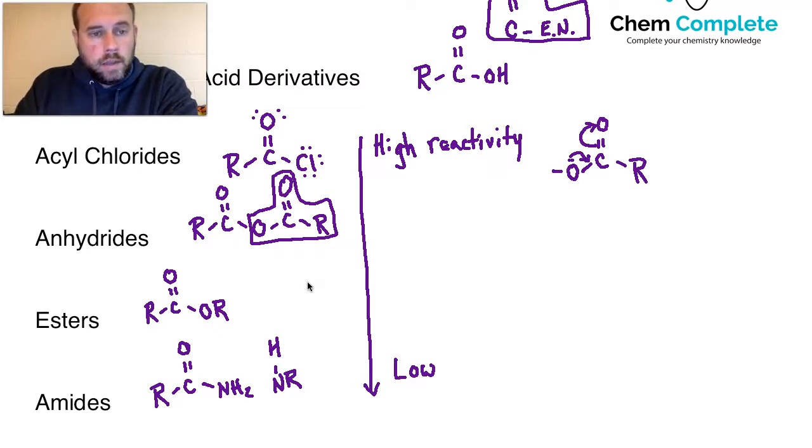When we are taking a look at this, everything that is higher on the list can be turned into something lower on the list, but not vice versa. So in other words, acyl chlorides can be turned into anhydrides, esters, and amides. Anhydrides can be turned into esters and amides. Esters can be turned into amides, and so on.